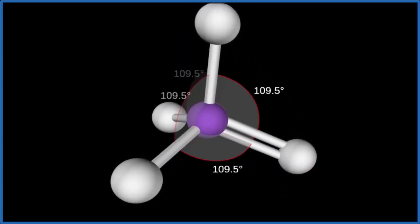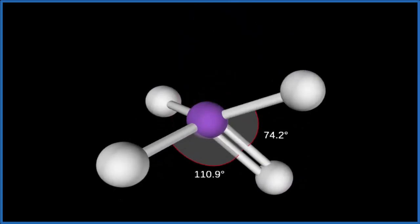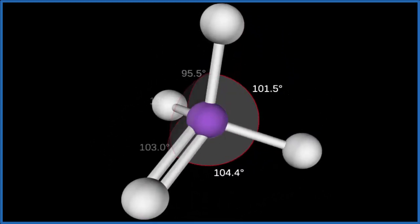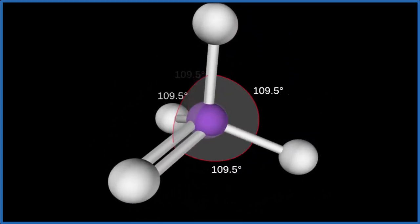The bond angles for this should be 109.5 degrees. There aren't any lone pairs, so the electron geometry will be tetrahedral as well. Let's go back to our Lewis structure.